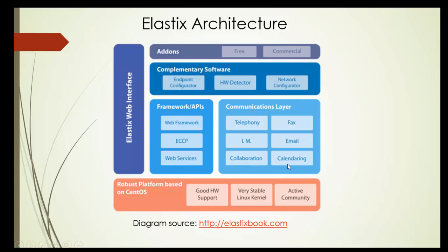The next top layer is the communication layer, which includes telephony, fax, IM, email, collaboration, and calendaring. After that we have the complementary software layer, which contains software packages such as endpoint configurator, hardware detector, and network configurator. We will see more details about these in the next slides.